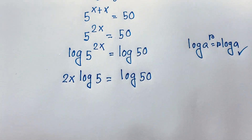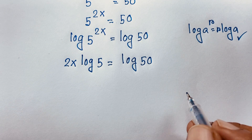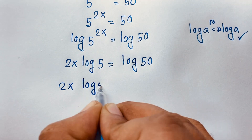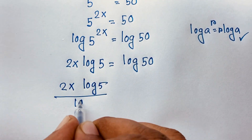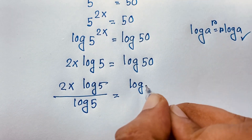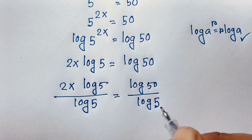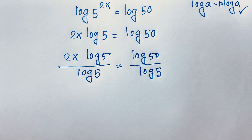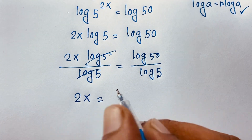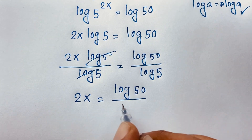Now if I divide both sides by log 5, I can see easily here: 2x·log 5 divided by log 5 is equal to log 50 divided by log 5. The log 5 terms cancel out, and we find out 2x is equal to log 50 over log 5.